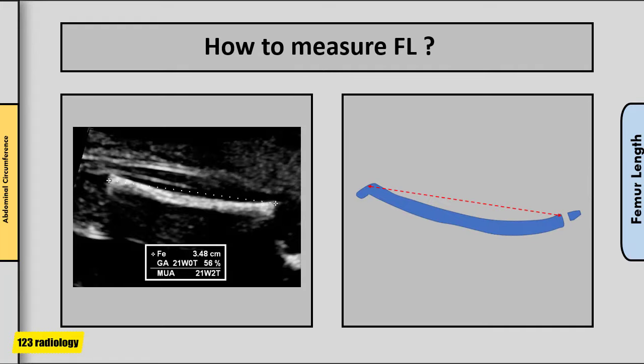To measure femur length, obtain a longitudinal view of the femur closest to the probe. The endpoints are easiest to define when the femur lies at a slight angle of 5 to 15 degrees to the horizontal. The full length of the bone should be visualized and not obscured by shadowing from adjacent bony parts. Magnify the image so the femur fills at least 30% of the monitor. Place the intersection of the calipers on the outer borders of the femur bone, outer to outer. The greater trochanter should not be measured.